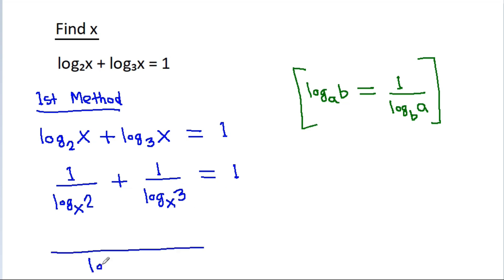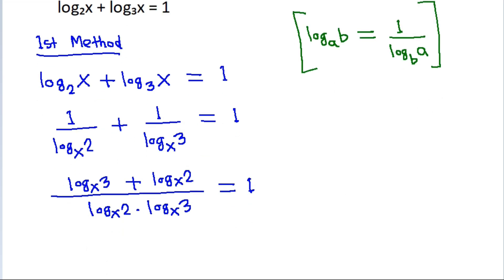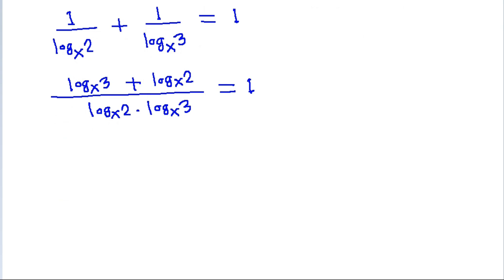Taking the LCM of log base x of 2 and log base x of 3, we get log base x of 3 plus log base x of 2 over log base x of 2 times log base x of 3 equals 1. And using the property that log base x of a plus log base x of b equals log base x of a times b.